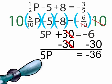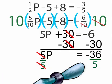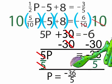To get rid of the 5 in front of the P, we can divide both sides by 5. The two 5's cancel out on one side. On the other side, we are left with negative 36 over 5. Our answer now reads, P equals negative 36 over 5.